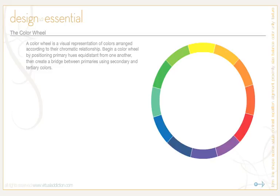Let's take a look at the color wheel because it's such a powerful tool when implementing color into your designs. The color wheel is basically a visual representation of color theory, sometimes called a color circle, where colors are arranged according to their chromatic relationship. Begin a color wheel by positioning primary hues equidistant from one another, then create a bridge between the primaries using secondary and tertiary colors.